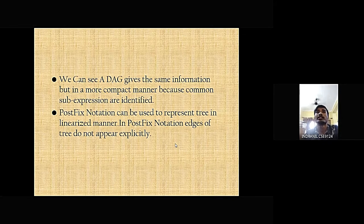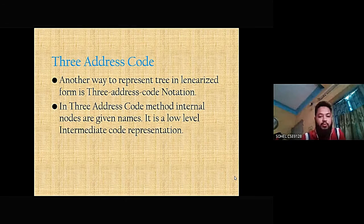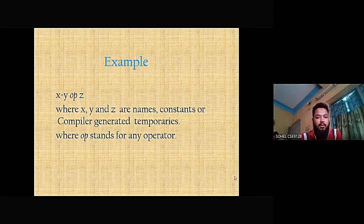A DAG, which is a Directed Acyclic Graph, gives the same information but in a more compact manner because common sub-expressions are identified. Post-fix notation can be used to represent a tree in a linearized manner; in post-fix notation, edges of the tree do not appear explicitly. Three-address code is another way to represent a tree in linearized form, where internal nodes are given names. Three-address code is a low-level intermediate code representation.